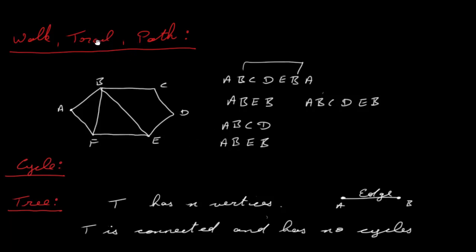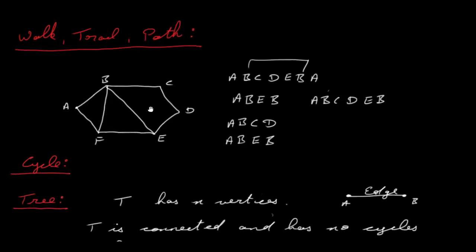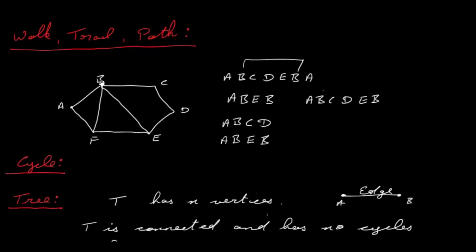A trail is a walk in which all the edges are different, but not necessarily all the vertices. So if I go from A to B to C, D, E, F, A, that would be a trail; or A, B, C, that would be a trail. But if I go A, B, E, F, B, and back to A again, that's not a trail because I've repeated a particular edge.